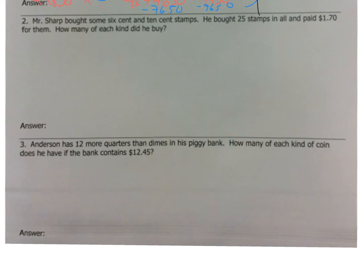Mr. Sharp bought 6 cent and 10 cent stamps. So, 6 cent, which is 0.06, 10 cent, which is 0.10. Now, he bought 25 stamps in all. That right there, total quantity. So, total quantity is 25, which means, like I said before, one gets X, the other gets 25 minus X. Anytime they give you total quantity, it has to be split like this. Now, he paid $1.70 for them. That's total money. $1.70. How many of each kind did he buy? So, we're set for our boxes.